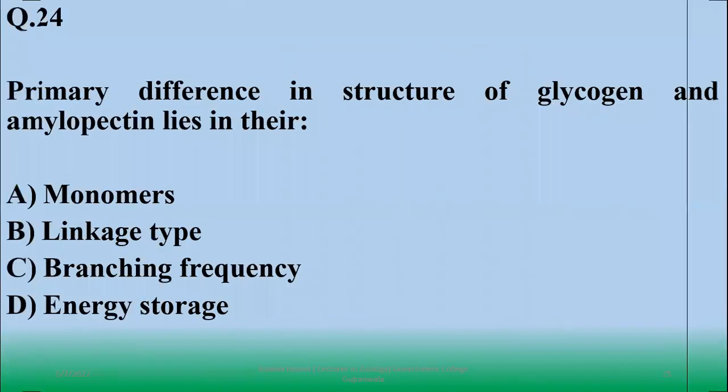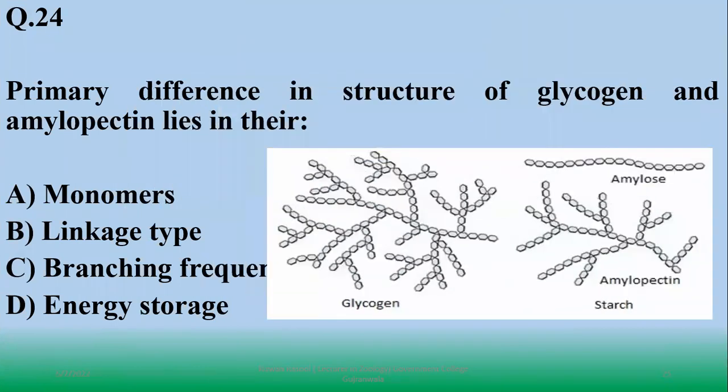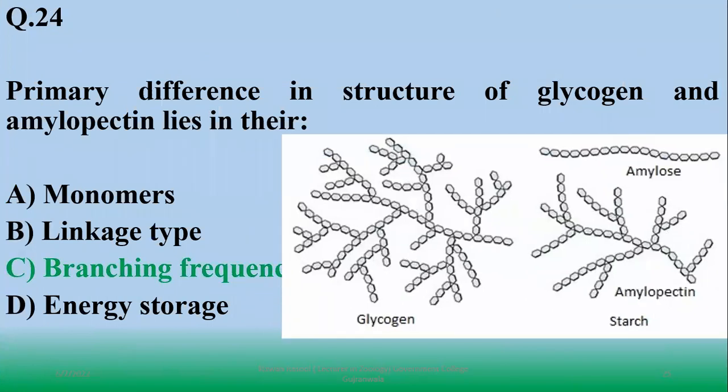Number 24: primary difference in structure of glycogen and amylopectin lies in their branching frequency. Otherwise linkage types, monomers, and energy storage function are similar, but glycogen is more frequently branched as compared to amylopectin.